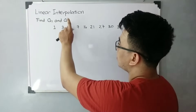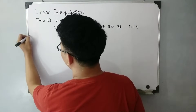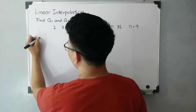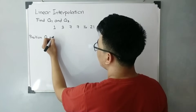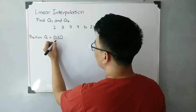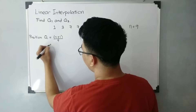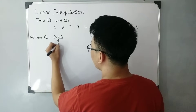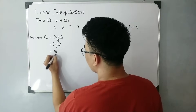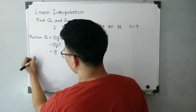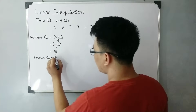We are asked to find quartile 1 and quartile 3. First, let's find the position of quartile 1 using the formula (n + 1) / 4, where n = 9. Substituting: (9 + 1) / 4 = 10 / 4 = 2.5. So the position of quartile 1 is 2.5.